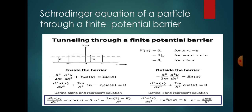Inside the potential barrier, the wave function is governed by −(ℏ²/2m)(d²ψ/dx²) + qV₀ψ = Eψ, which gives d²ψ/dx² = −(2m/ℏ²)(qV₀ − E)ψ. If the wave function is u, then d²u/dx² = −(2m/ℏ²)(qV₀ − E)u.